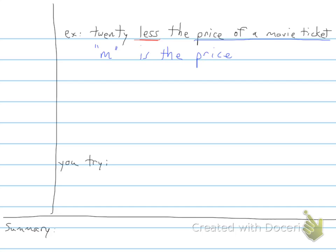So 20 less the price of a ticket. In order to write that as an expression, we would write it $20 minus the price of the movie ticket. And we write it that way because we have $20 minus the price, less the price of a movie ticket.